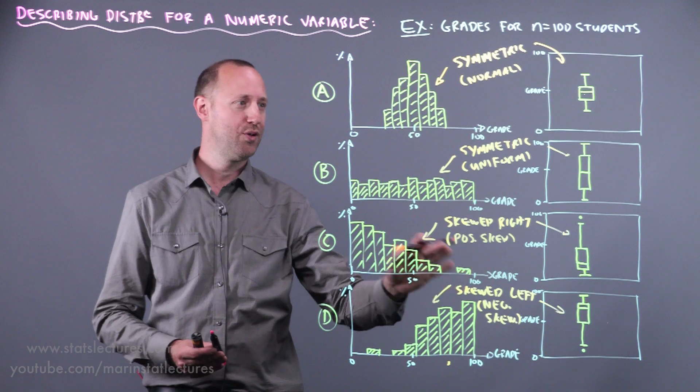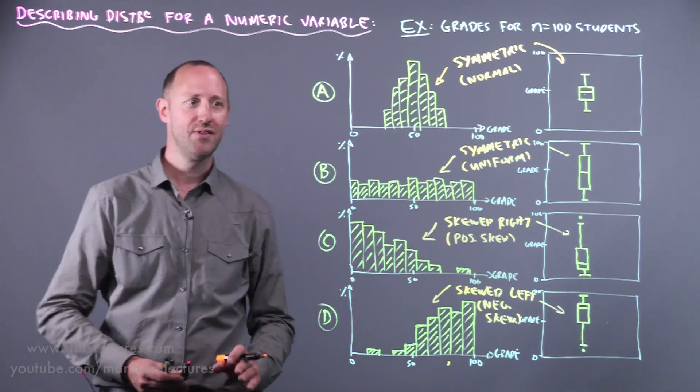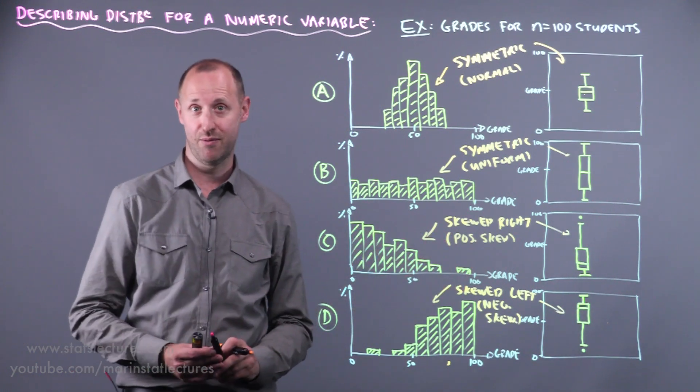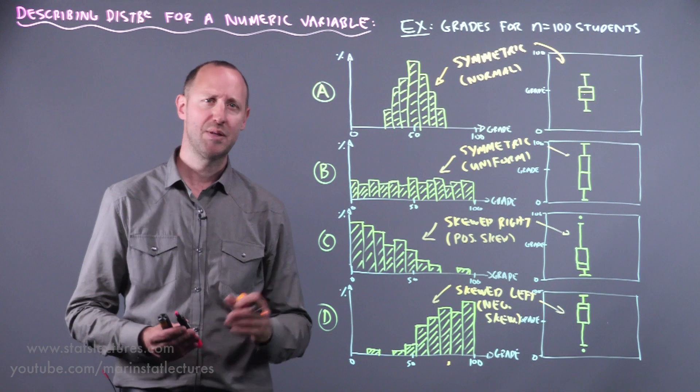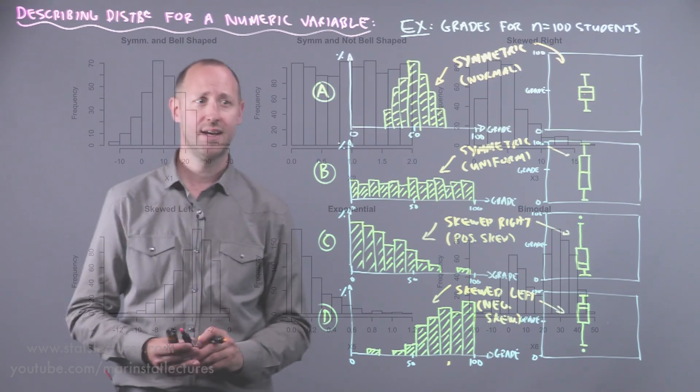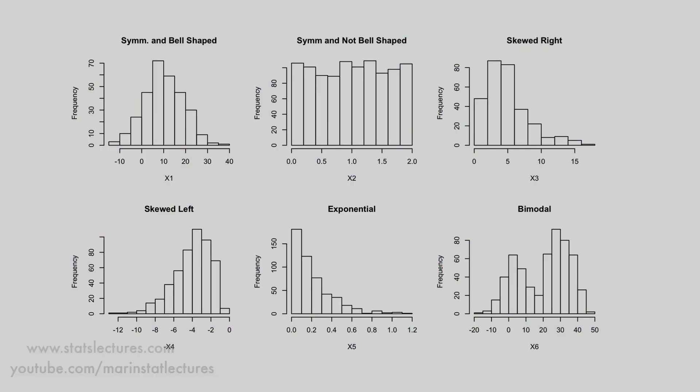Now, think about symmetric, skewed, skewed right, skewed left. There's often even more descriptive words that we use, things like exponentially distributed or things like that. So you can take a look at this graphic here and it's going to show a few more examples of other descriptive words that we might use to describe the shape of a distribution.